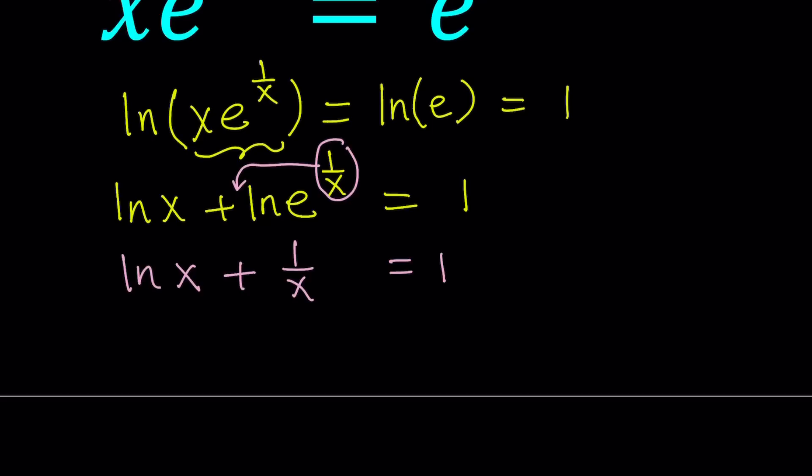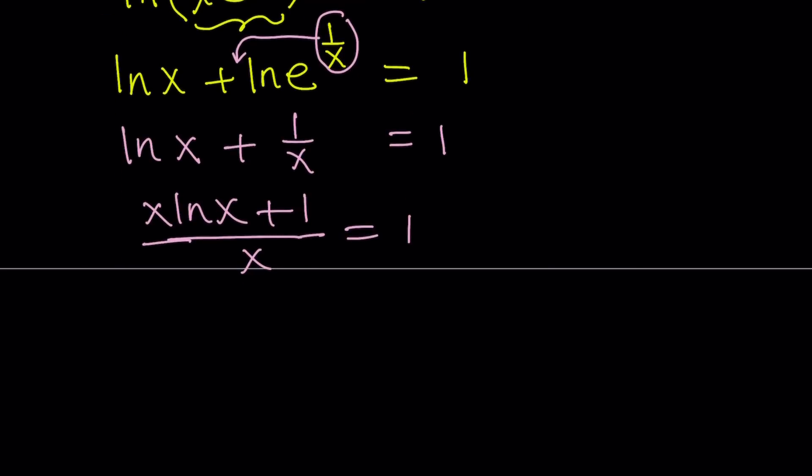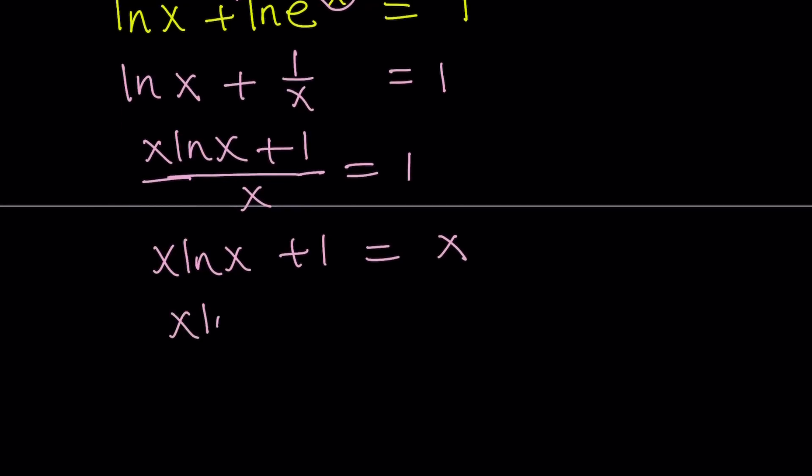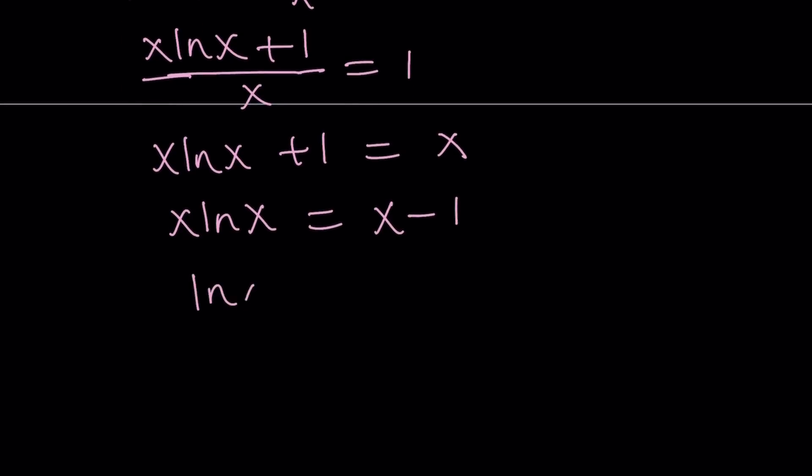How about making a common denominator? We get x LN x plus 1 divided by x equals 1. And then I can just multiply both sides by x. x LN x plus 1 is equal to x. So my goal is to bring the LN x on one side and everything else pretty much on the other side. So we can write this as x LN x equals x minus 1. And then we can just divide both sides by x and it's going to look like this: LN x equals x minus 1 over x.